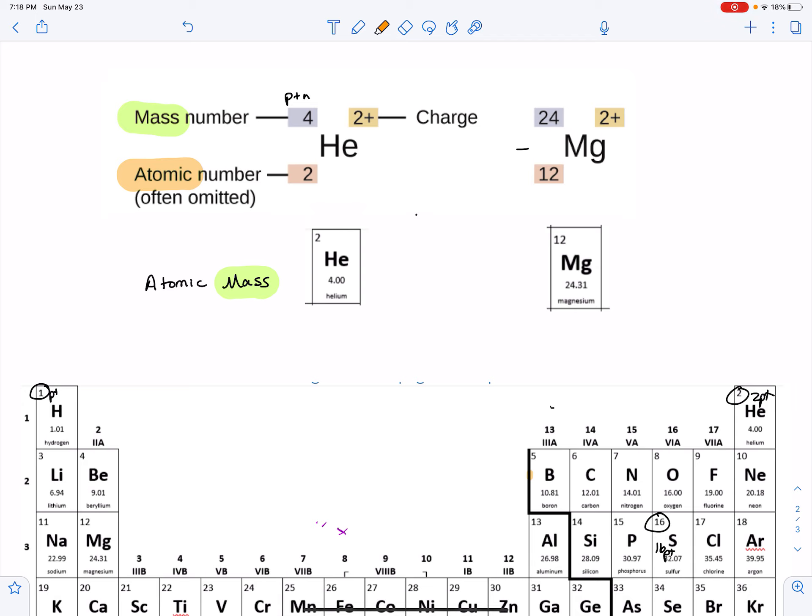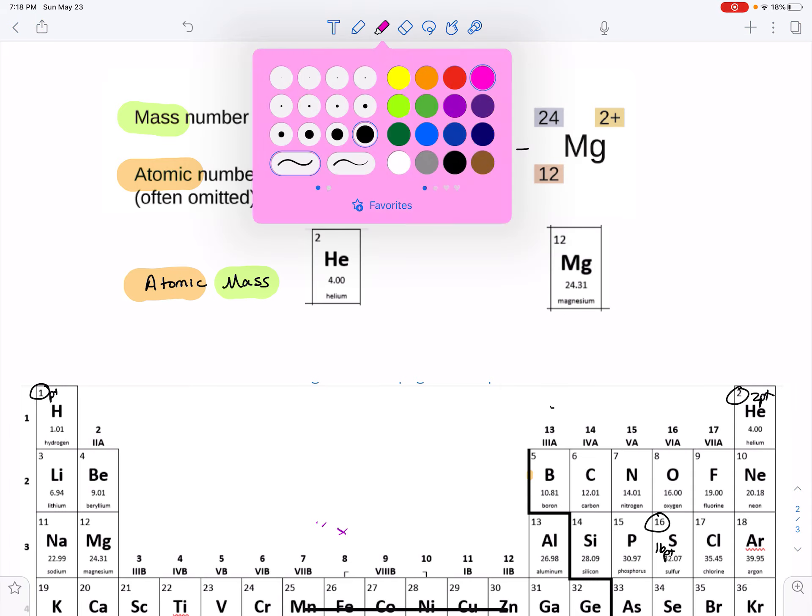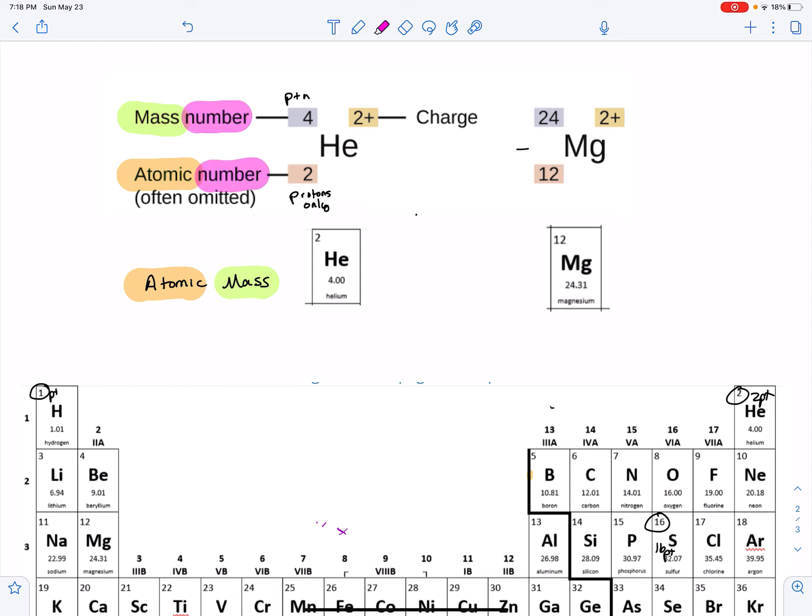And then you have your atomic number. Now the atomic number is just the number of protons, so it's protons only. Look, this word has the word atomic in it. And then just to make it more confusing, these both have the word number in them.